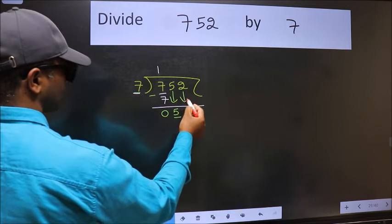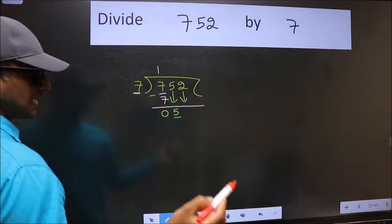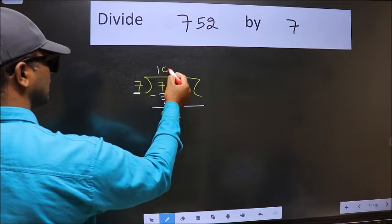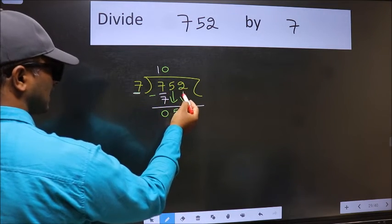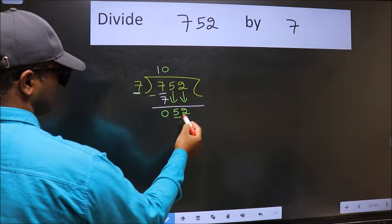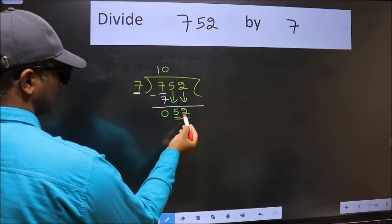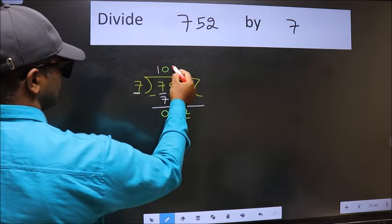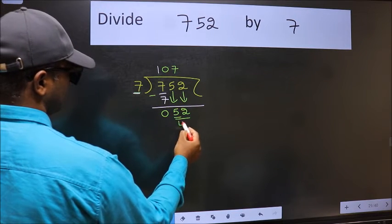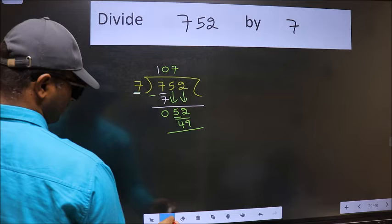The rule to bring down the second number is we should put zero here, then only we can bring this number down. Now 52 - a number close to 52 in the 7 table is 7 sevens, 49. Now we should subtract.